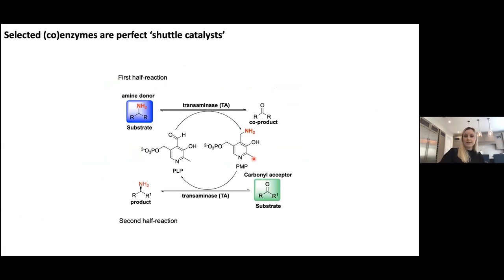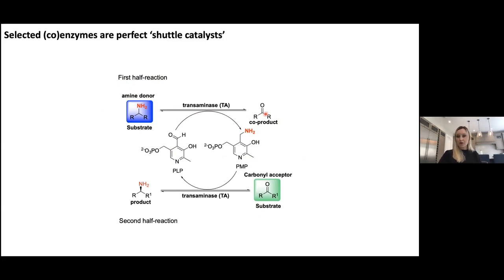We started to think about the parallels and what we could do with this shuttling idea with enzymes, because apart from a few examples there wasn't much exploited in this area. As I mentioned, coenzymes are really perfect shuttle catalysts — PLP being the one we're focusing on here. In a typical transaminase reaction, you have an external amine donor and a separate carbonyl acceptor substrate. The PLP functions to pick off the amine functionality to generate PMP, which then becomes the amine donor. In the first half-reaction you generate a co-product, and in the second half-reaction the carbonyl acceptor is converted to the chiral amine product.